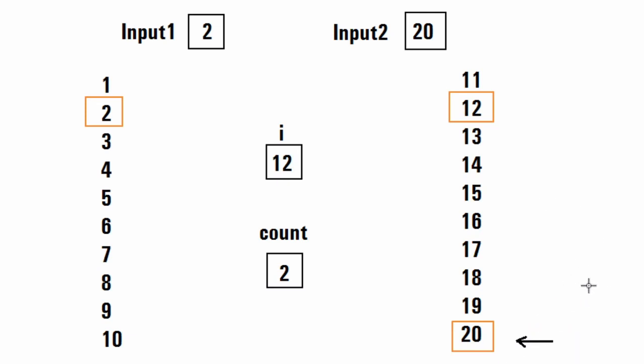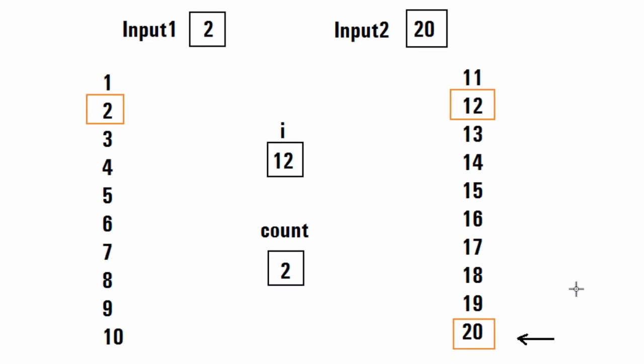Similarly, for twenty, we take the last digit zero and compare with input one — they don't match. Then we move to the next digit two, which matches input one, so count is incremented again. In this way we get the total occurrence of input one in the series from one to input two and display it. Now let's see the solution in C language, then Java and Python as well.